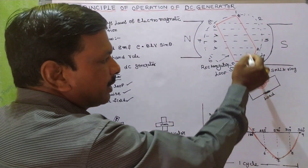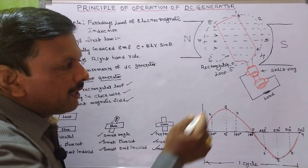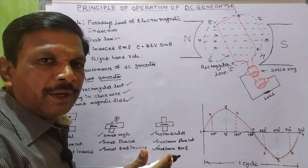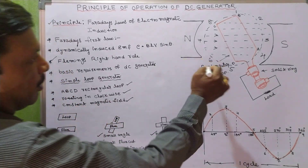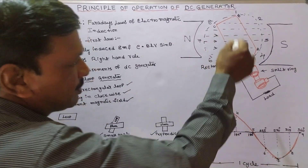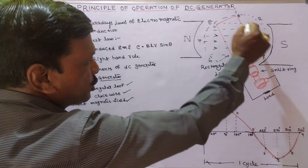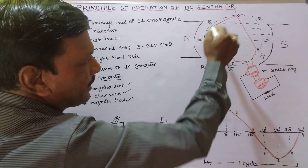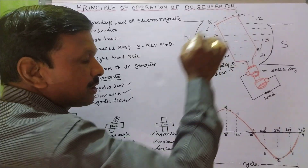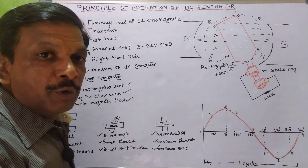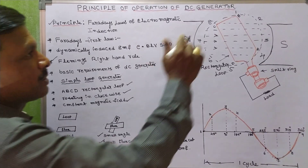This loop is connected to a split ring, where AC is converted into DC. The split ring is also called a commutator. Now, coming to the operation of the simple loop generator — first, assume the loop rotates in a clockwise direction in a constant magnetic field with constant speed.